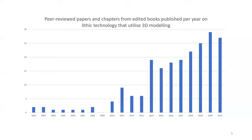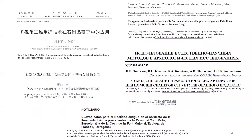One issue with the dataset is that it's biased towards English language publications. For better or worse, English is the current lingua franca in academia, and the majority of peer-reviewed archaeological work is published in English, but there is still important research done in other languages. Research applying 3D modelling to lithic assemblages has been published in Mandarin, Italian, Japanese, Russian, and Spanish. Out of 190 papers and chapters, 174 — just over 90% — are in English. I've chosen to exclude non-English papers because I'm less confident I have the complete corpus and more likely to misinterpret their content.